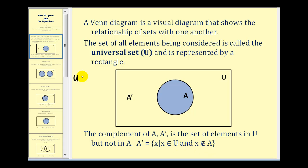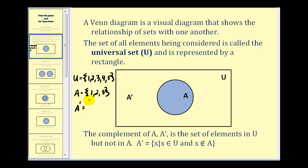So if we let the universal set be the integers one, two, three, four, and five, and A was the set containing elements one, two, and three, then the complement of A would be the elements in U that are not in A, so it would contain the elements four and five.